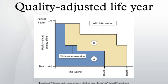The QALY is often used in cost-utility analysis to calculate the ratio of cost to QALYs saved for a particular healthcare intervention. This is then used to allocate healthcare resources, with an intervention with a lower cost-to-QALYs-saved ratio being preferred over an intervention with a higher ratio.